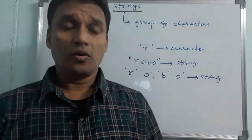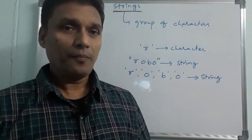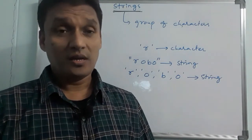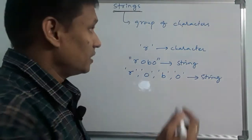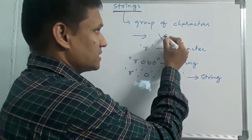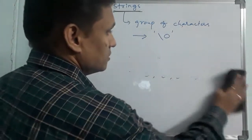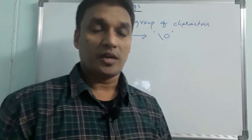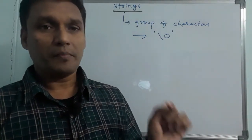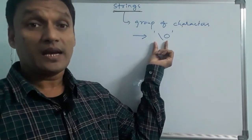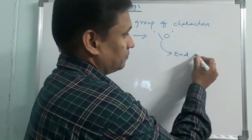The last element of a string is the null character. String is a collection of characters, but the last element is the null character. The null character means the end of the string.